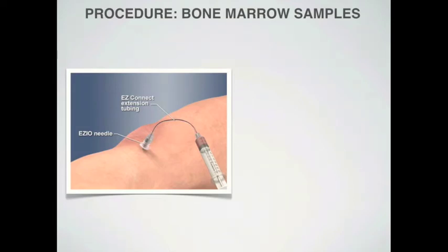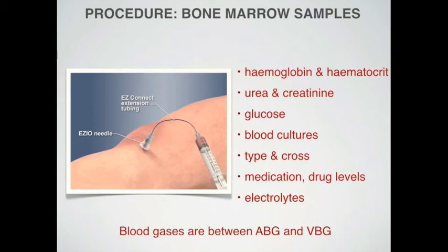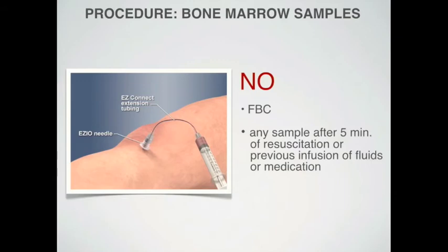After wasting 2 ml of the marrow and blood mixture, the following tests from IO samples correlate very well with blood samples: hemoglobin and hematocrit, urea and creatinine, glucose, blood cultures, type and cross, medication drug levels, and electrolytes — while blood gases fall somewhere between ABG and VBG. Intraosseous samples can block conventional laboratory equipment, so it is very important to correctly label them before sending to the lab. Some point-of-care analyzers like iSTAT are able to process intraosseous samples safely, but others are not — so be familiar with the equipment you plan to use. Note that bone marrow samples must be taken at the very beginning when IO access is obtained, as results are no longer reliable after administration of fluids or medication. Also, full blood count does not correlate well with blood samples.